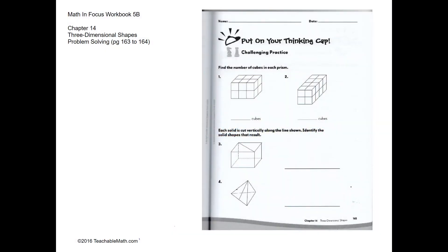Challenging practice: find the number of cubes in each prism. Question one. We have two layers over here. For the first layer we have one, two, three, four, five, six, so we have six over here.